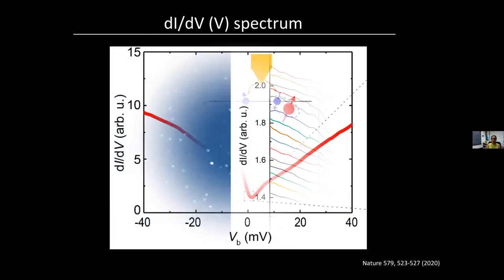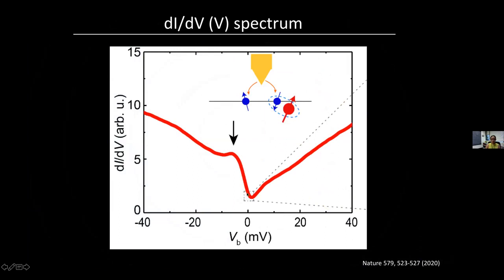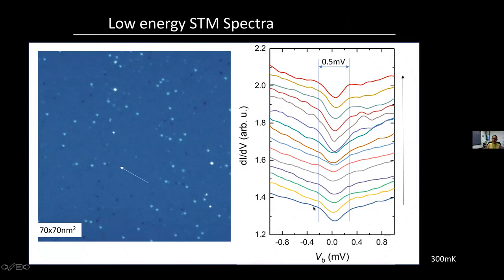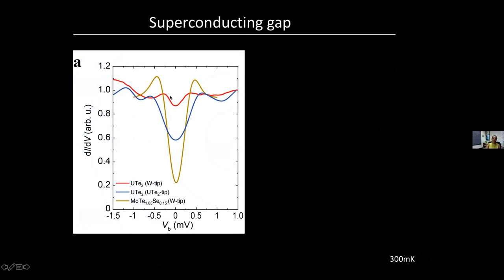Now let's zoom into very low energy scales — within one millivolt of the Fermi energy — and look for signatures of superconductivity below T_c. These are spectra obtained along a line going across the sample. You can see the presence of a particle-hole symmetric shallow gap centered at the Fermi energy. With the same STM, we also obtained data on another superconductor, MoTe2, which has a similar T_c. That gap, even though it doesn't go to zero, is much deeper than the one we see on uranium ditelluride.